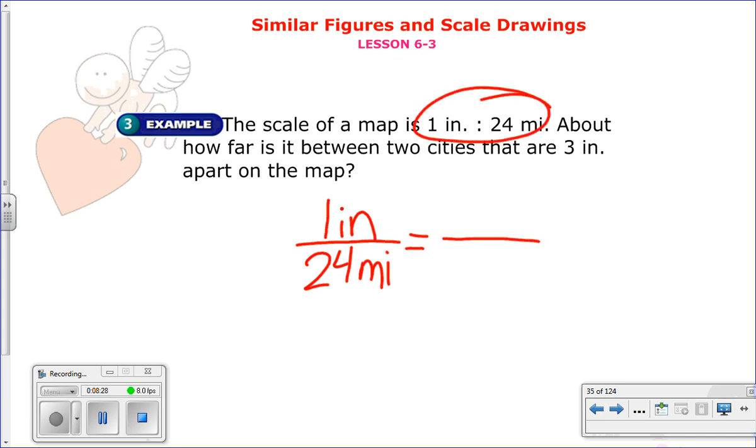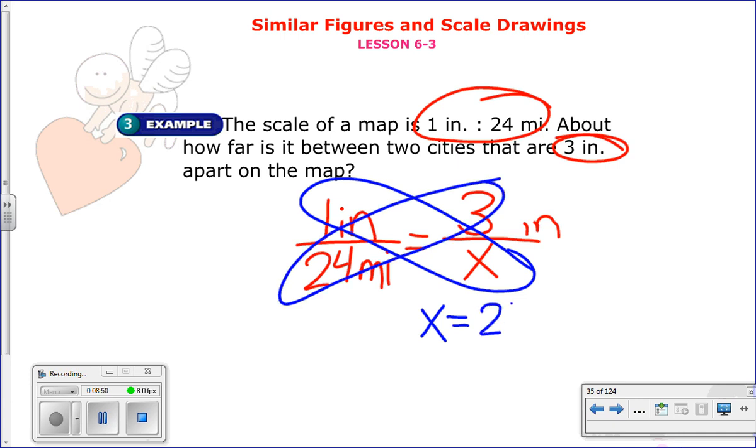Now, again, we have to do the next one. And we have to look at what they tell us. About how far is it between two cities that are 3 inches apart? Well, I have inches on top, so this one should stay on top. So I need to find out how many miles that is. So, again, two cross products. 1 times x is 1x or just x. 24 times 3 is 72. So x is 72 miles.